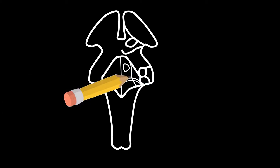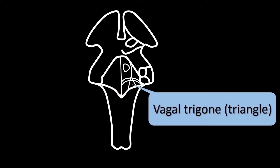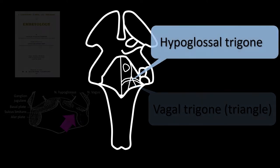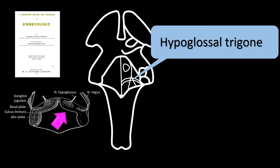Next, we put the pencil at the sulcus limitans just above the stria medulares and make a line slanted medially. Lateral to it, but medial to the sulcus limitans, is the vagal trigone. I have indicated the vagal trigone with an arrow in the same embryologic drawing shown before. And medial to it is the hypoglossal trigone.